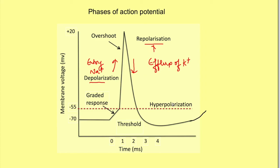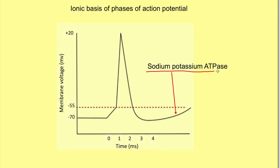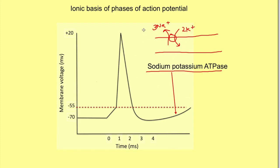These ionic changes need to be normalized. This is brought about by the sodium-potassium ATPase, which throws sodium out of the cell and brings potassium back into the cell. So the sodium-potassium ATPase corrects the ionic changes that have taken place during the phases of the action potential, and also brings the hyperpolarized potential back to the resting membrane potential.